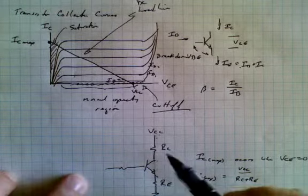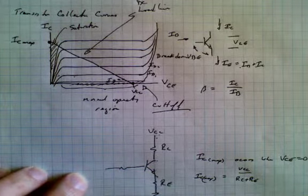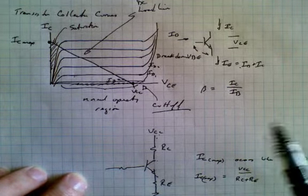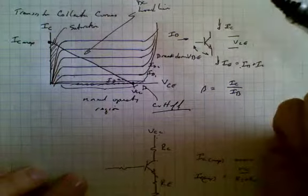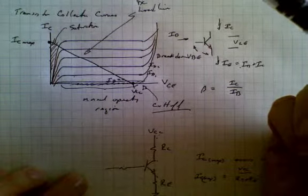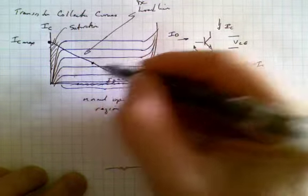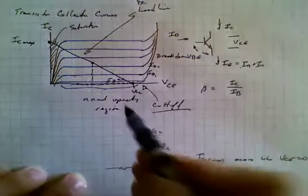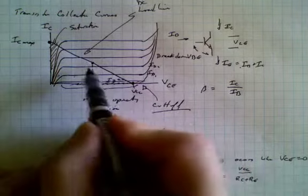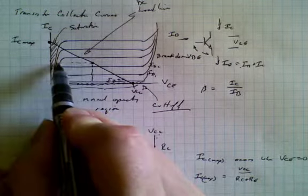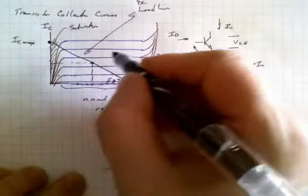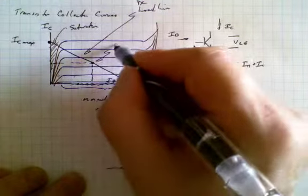Now if we look at the biasing conditions for the circuit when there's no signal coming in, we will find that we're able to calculate what the collector current is and the base current is and so on. And that might be someplace in here. This might be the point where it's idle. So under idle conditions, the voltage across the transistor might be that, and the current of the transistor might be that. And so this point would be called the Q point.